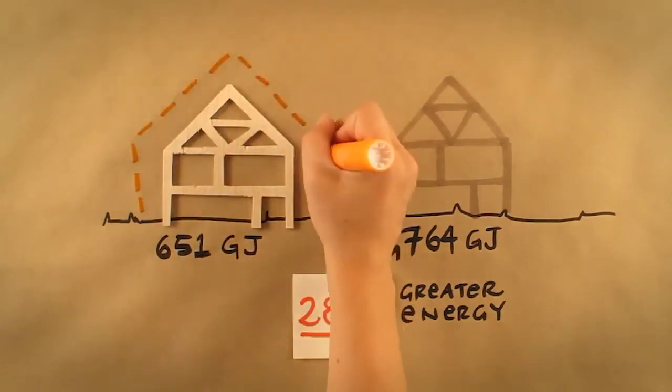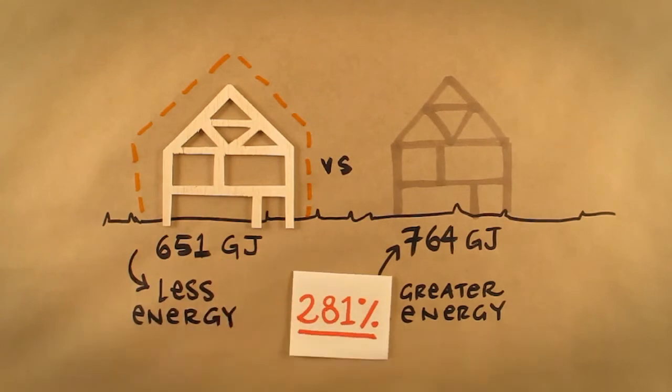Wood is also a better thermal insulator. Therefore, it takes less energy to heat and cool houses that are internally clad with wood or wood composite materials.